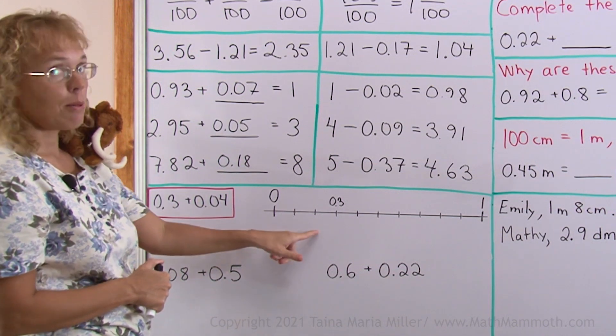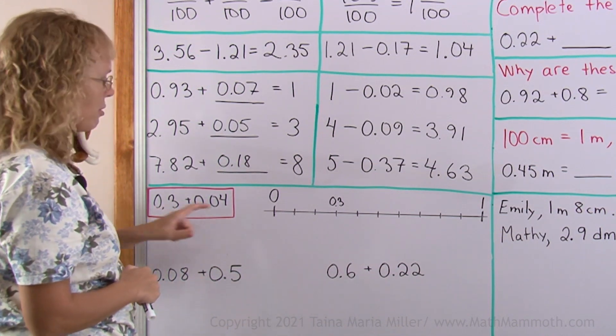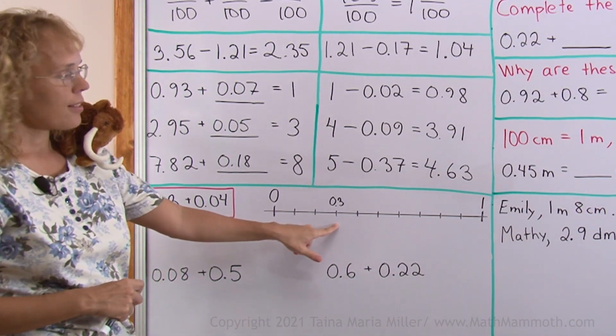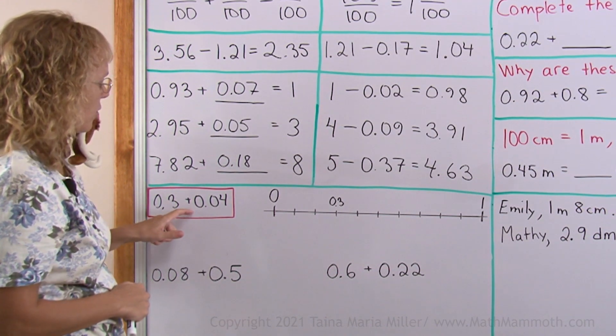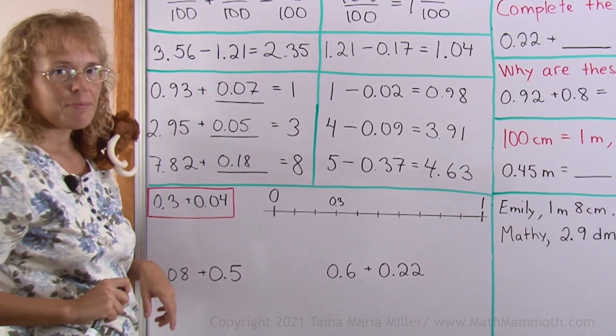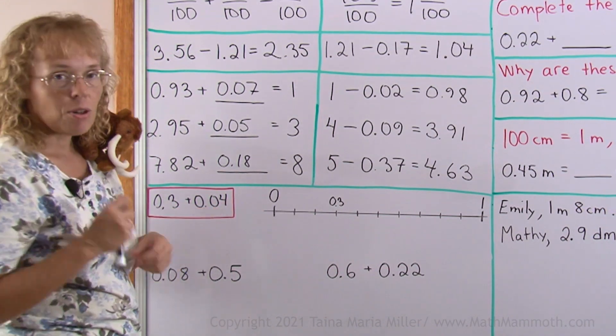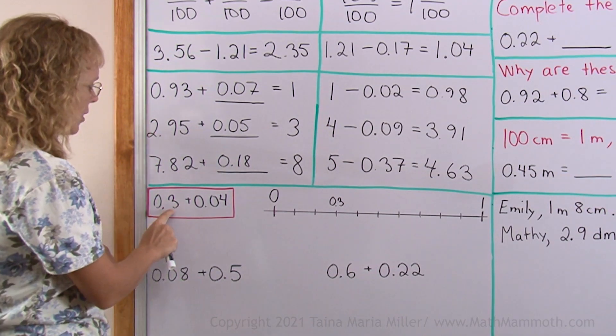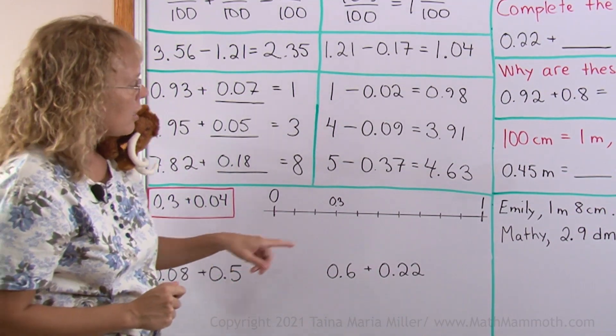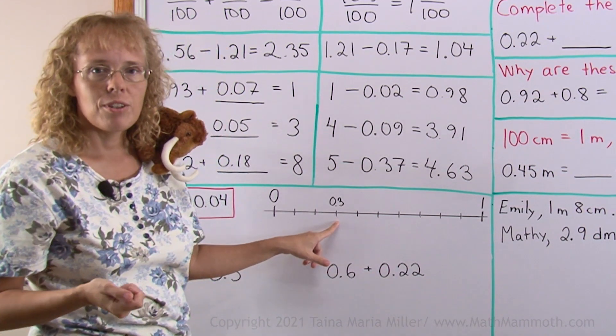To see why, let's look at the number line. I've marked 0.3 there, 3 tenths. And then this is like jumping this much further, and this number is 4 hundredths. Notice that these are tenths, these are hundredths, and so we will jump 4 hundredths further.